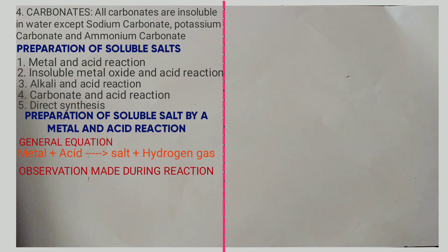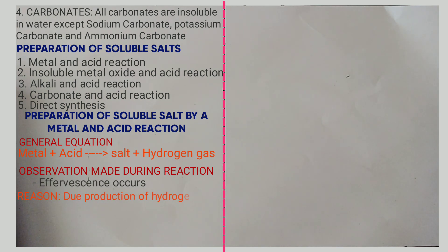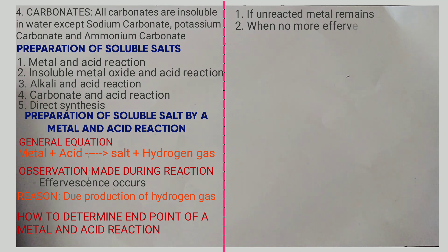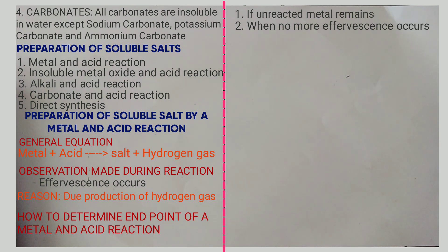The observation made during this reaction is that effervescence occurs, due to the production of hydrogen gas. To determine the end point of a metal-acid reaction there are two ways: if unreacted metal remains, or if no more effervescence occurs. For example, for zinc and hydrochloric acid: if unreacted zinc remains, or if no more effervescence occurs.